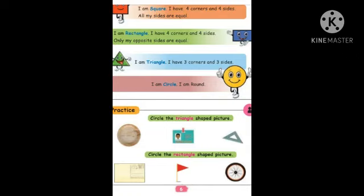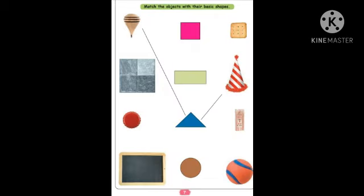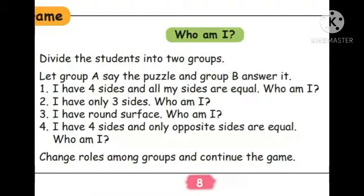I hope you all have completed the homework — page number six, seven matching, and eight. Shall we recall the questions one more time? 'I have four sides and all my sides are equal. Who am I?' — Square. Second question: 'I have only three sides. Who am I?' — Triangle. Third question: 'I have a round surface. Who am I?' — Circle. Last question: 'I have four sides and only opposite sides are equal. Who am I?' — Rectangle. All of you have to learn and memorize these question answers.